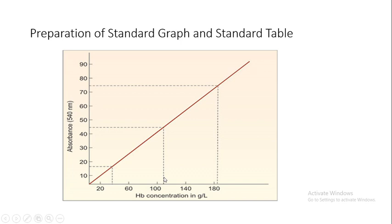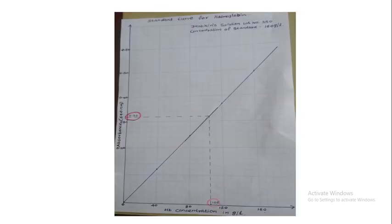After absorbance of the sample is taken, the corresponding hemoglobin value can be directly read by plotting on the graph. For example, if the absorbance of the test is 0.32, the corresponding hemoglobin value should be 105 grams per liter or 10.5 grams per deciliter. From this graph, it is possible to construct a table of readings and corresponding hemoglobin values. This is more convenient when large numbers of measurements are made.